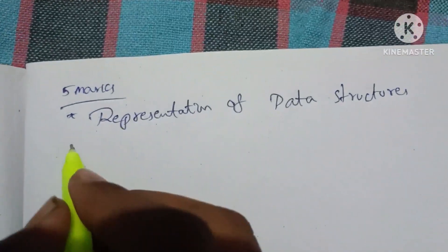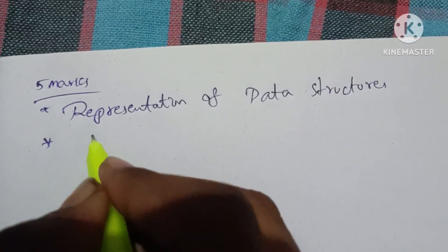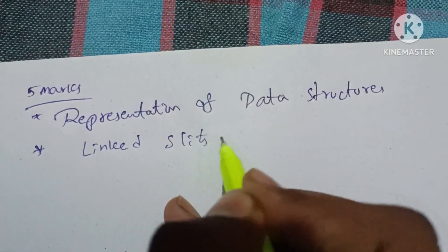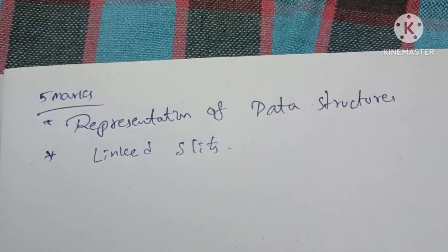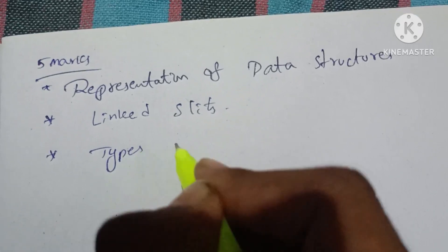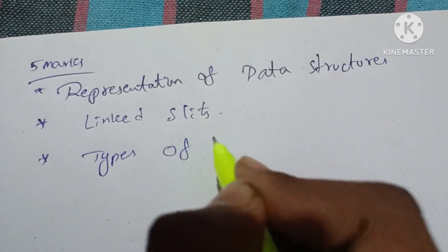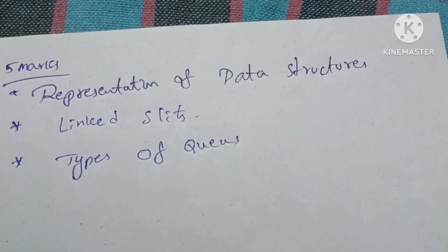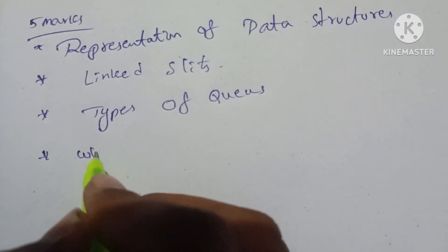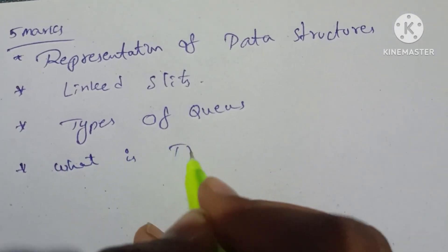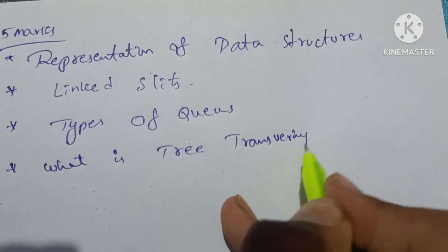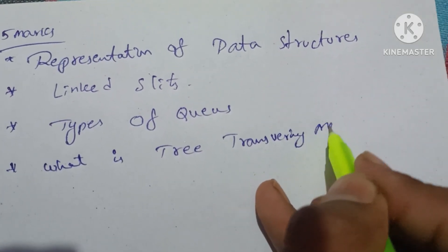First, what is linked list? It's very important for five marks and ten marks. Here are the types of queues, worth ten marks and five marks. Here is the question: what are the three traversal methods? What are the three traversal methods?